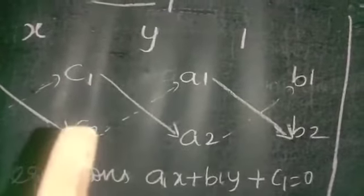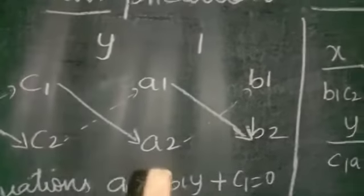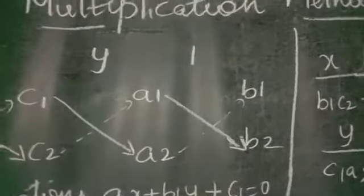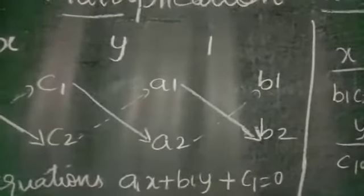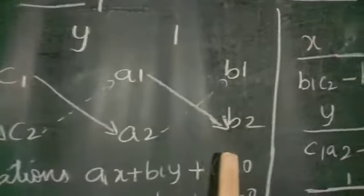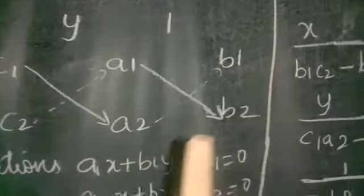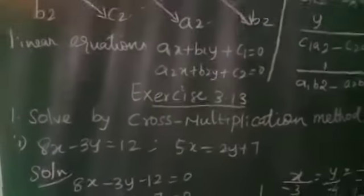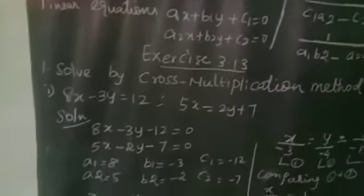On this side we have to put a minus. So the formula becomes: x divided by B1C2 minus B2C1, is equal to y divided by C1A2 minus C2A1, is equal to 1 divided by A1B2 minus B1A2. Now we see exercise 3.13 — solve using the cross multiplication method.